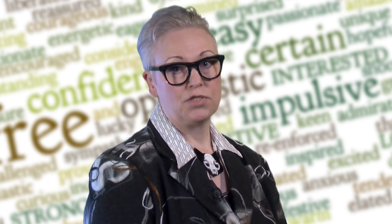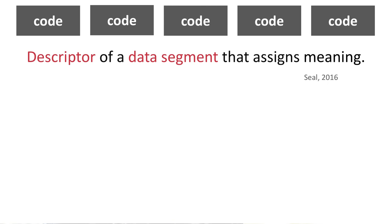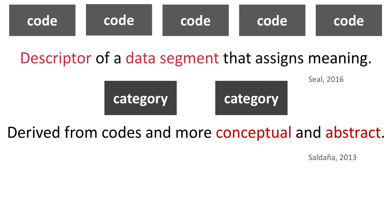Some concise definitions for codes, categories and themes are as follows. Bearing in mind that codes are more than mere labels, Seal's short and to-the-point definition is one to remember: a code is a descriptor of a data segment that assigns meaning. For example, in your interview data your respondent, a teacher, said 'I give up.' You might code this as 'teacher resignation.' Let's say you have dozens of codes — you will soon find that a variety of them may be categorized under one banner. Categories are more conceptual and abstract than codes, and it is up to you, the researcher, on how you categorize the codes.